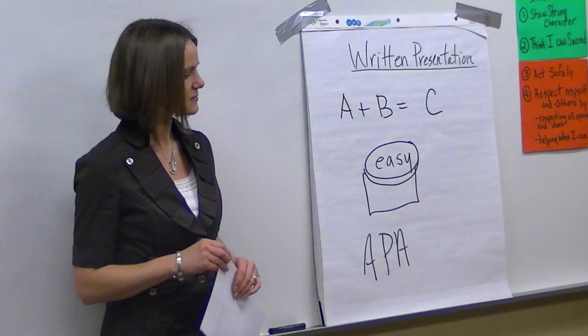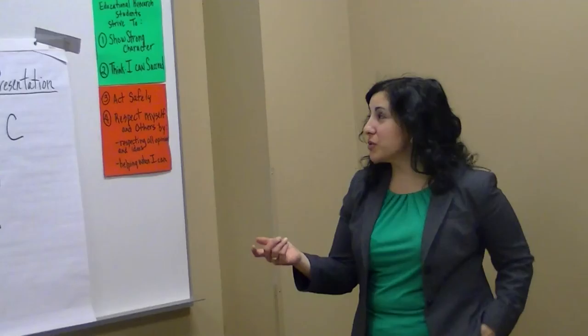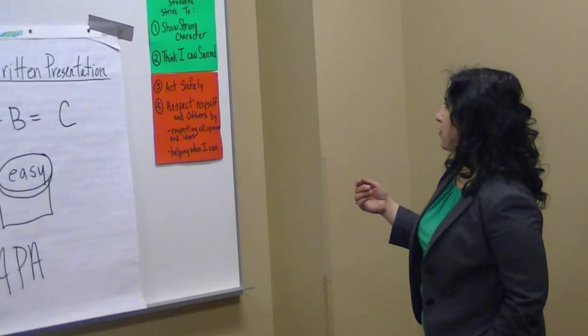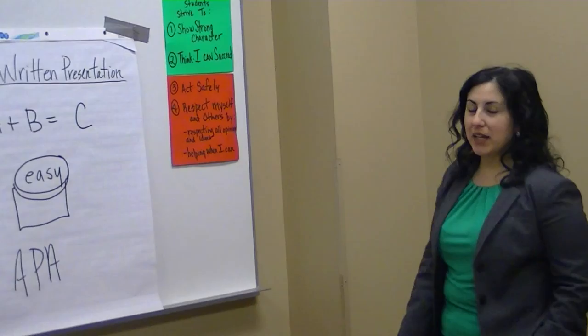So we have a little model to do for you guys that would have been done like in a school, where they would have decided what characteristics together, what characteristics are they looking for. These happen to be star characteristics, which were done in my daughter's middle school. Show strong character, think I can succeed, act safely, respect myself and others by respecting all opinions and ideas, and helping when I can. So we wanted to do a little something special for you guys and say that educational research students strive to do these star characteristics.